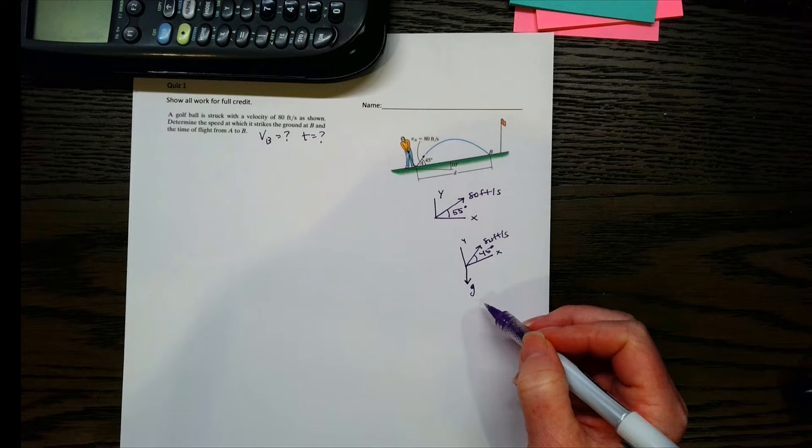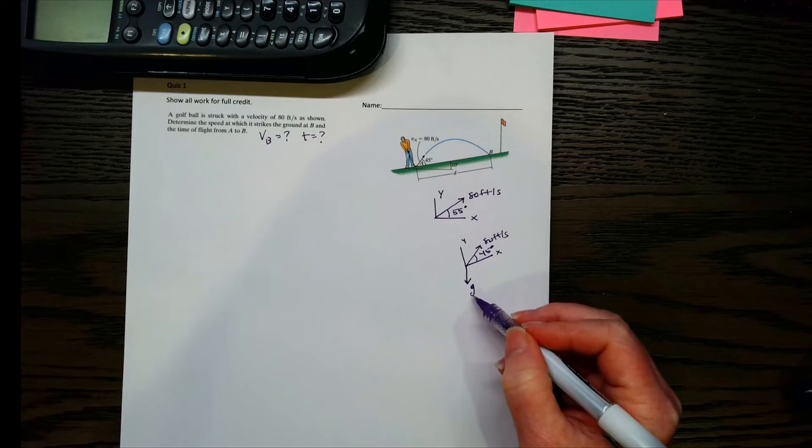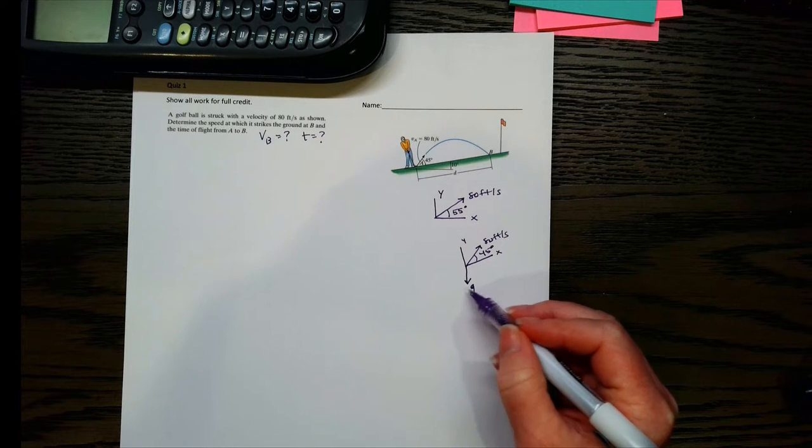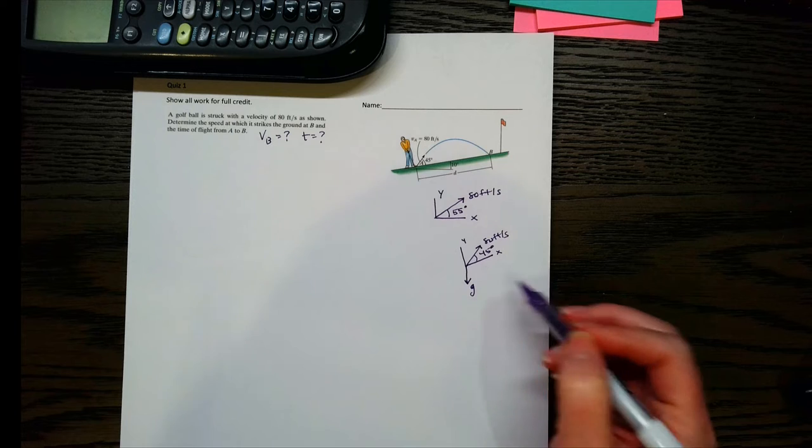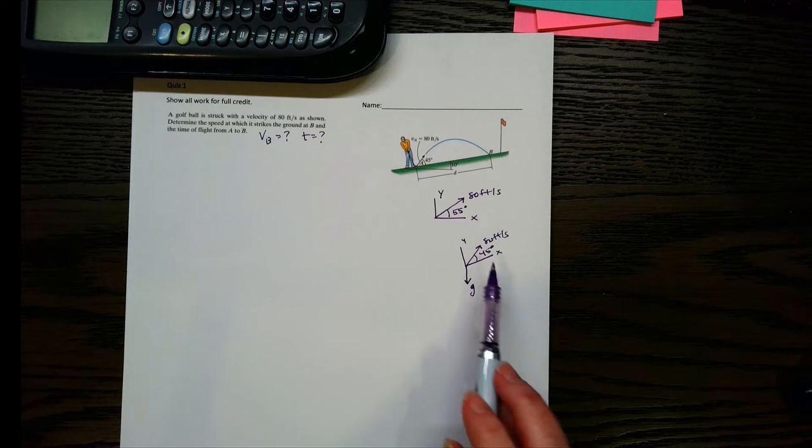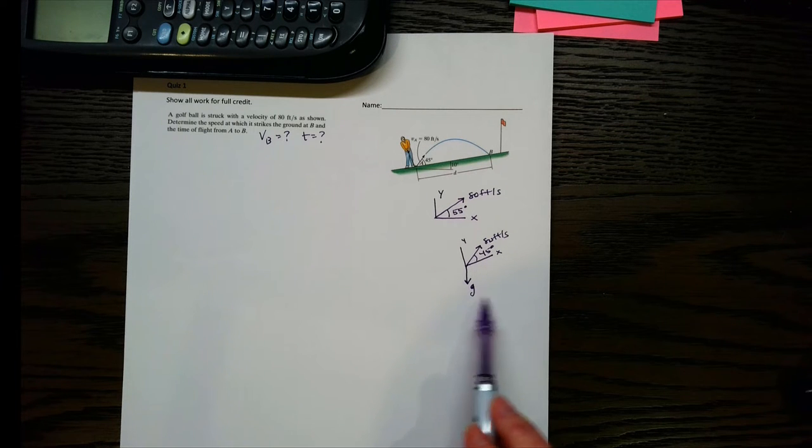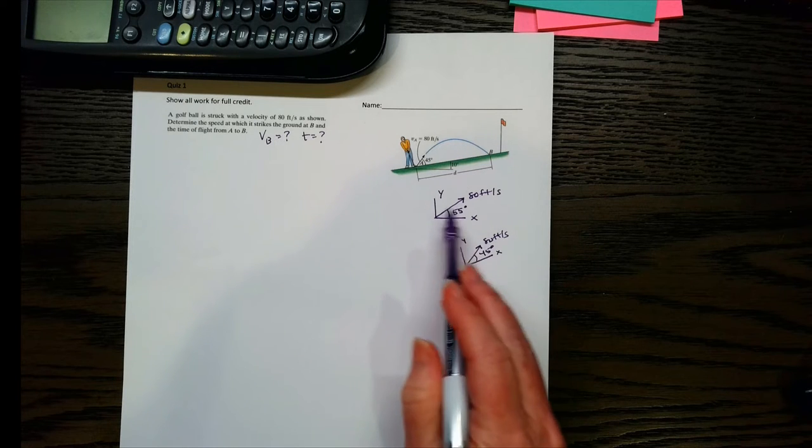So if you use the 45 degrees, you have to change this into x and y components for your acceleration. So then your ax would no longer be zero, and your ay would not be just 32.2. So that's the detail that most people miss if they use the 45 degrees, and then their answers were off.